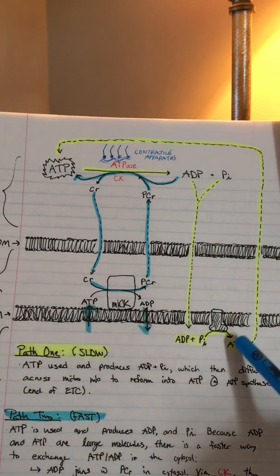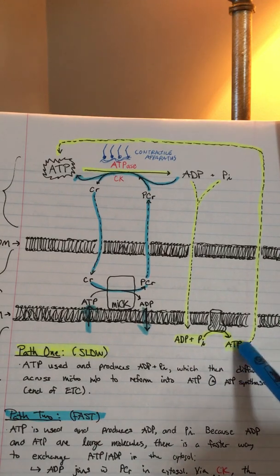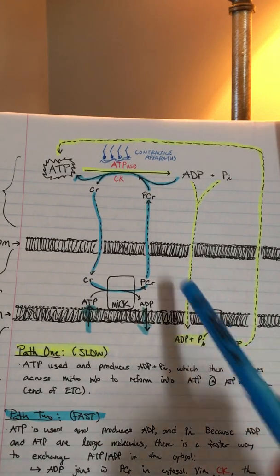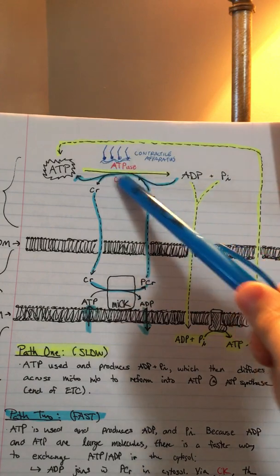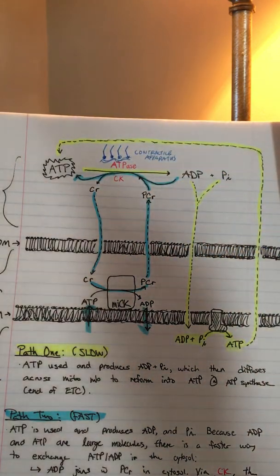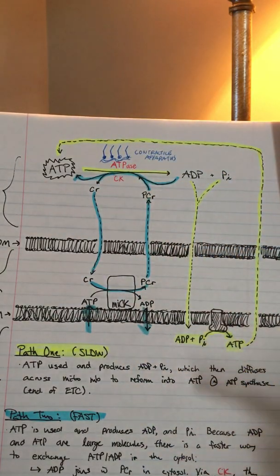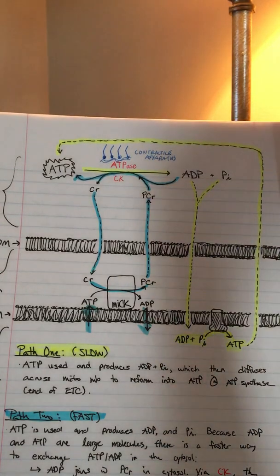The problem is that ATP is being created in the mitochondrial matrix but it's being hydrolyzed at the contractile apparatus in the cytosol. ADP and ATP are really large molecules with low concentration gradients to move across, so they move very slowly.